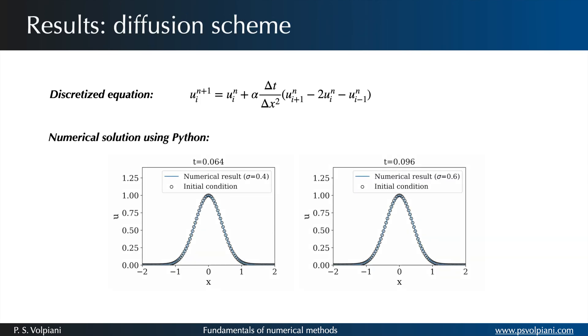For both simulations, we have delta x equals 0.04 and alpha equals 0.01. The results are shown in the following figures. The stability criterion is once again verified. While we have a stable solution for sigma less than 0.5, the solution diverges for sigma greater than 0.5.